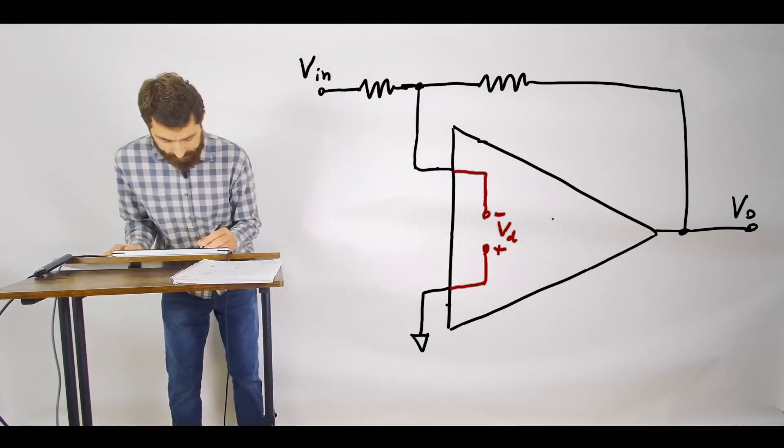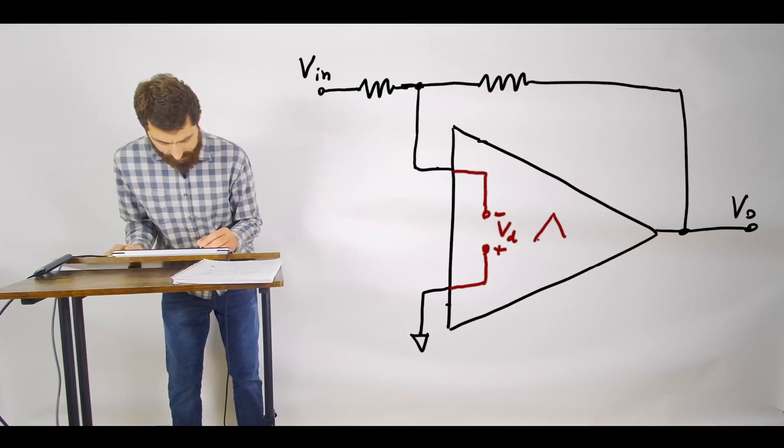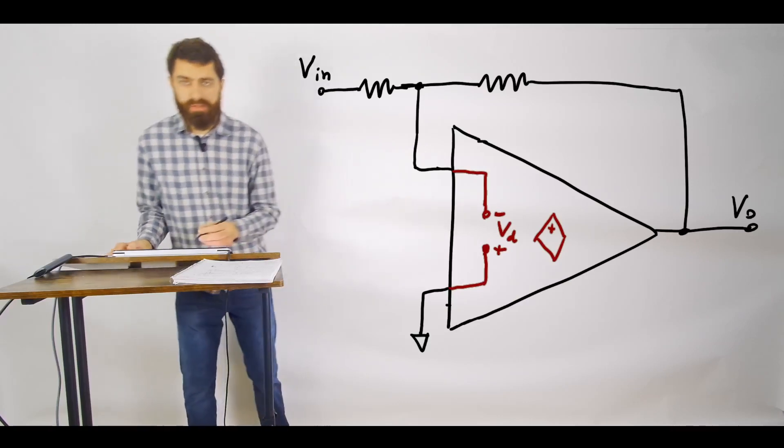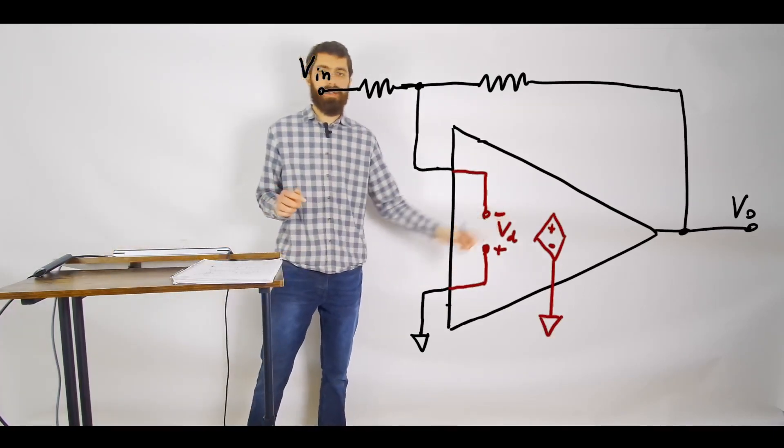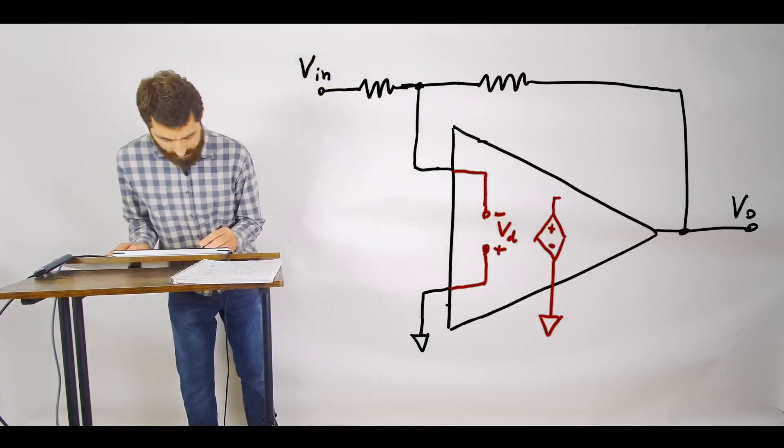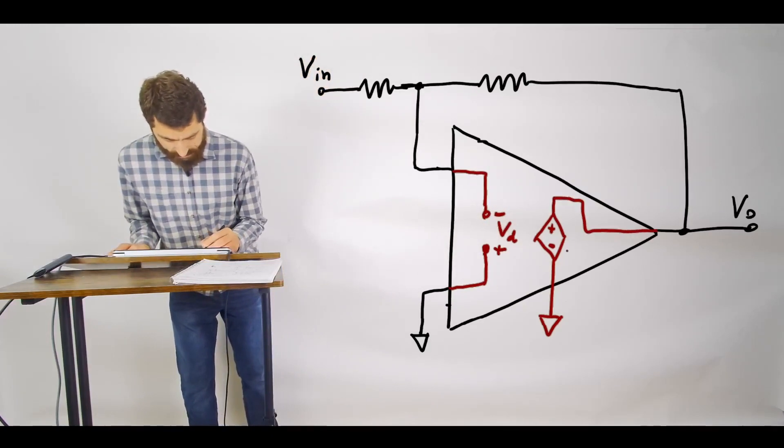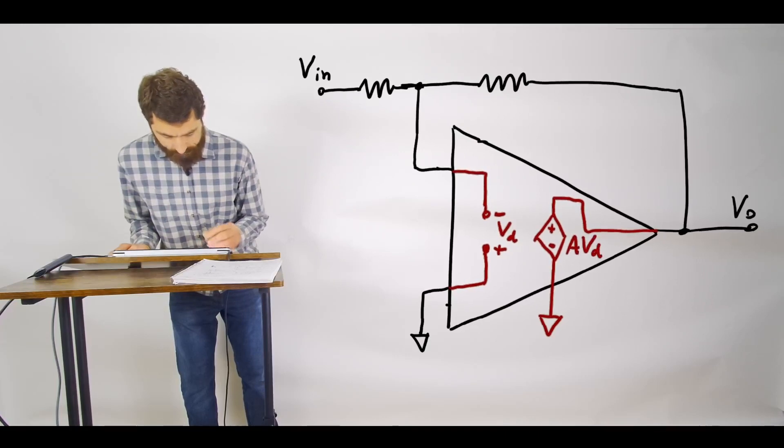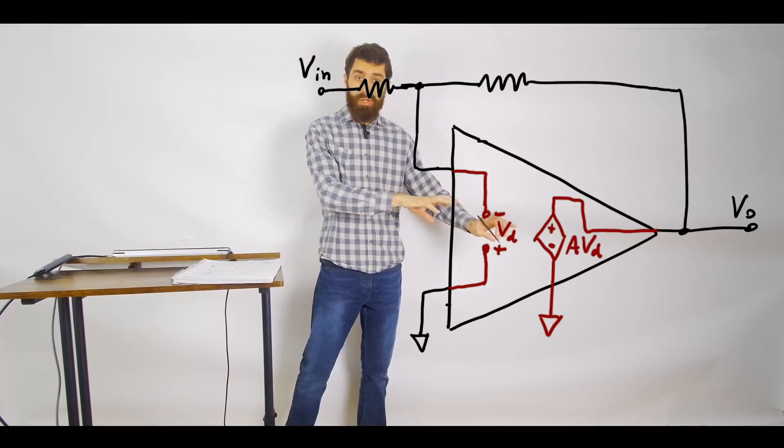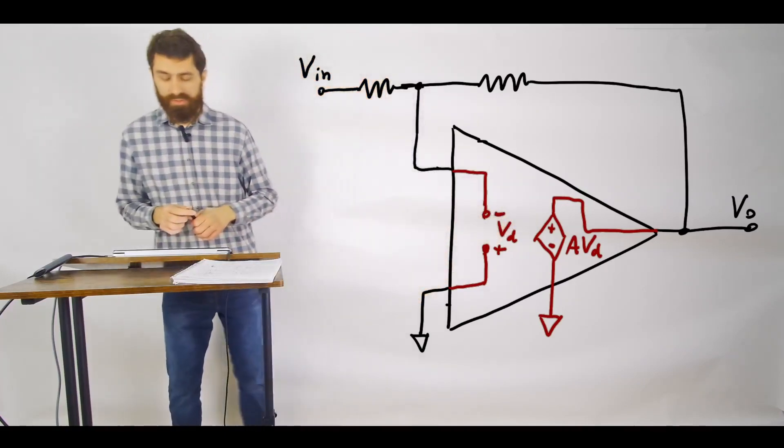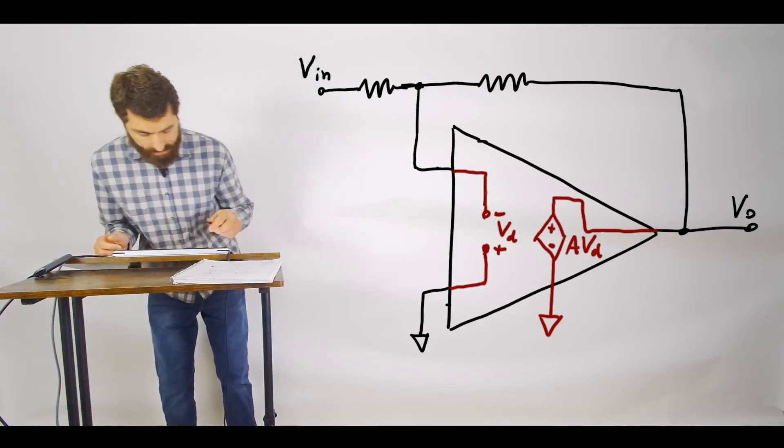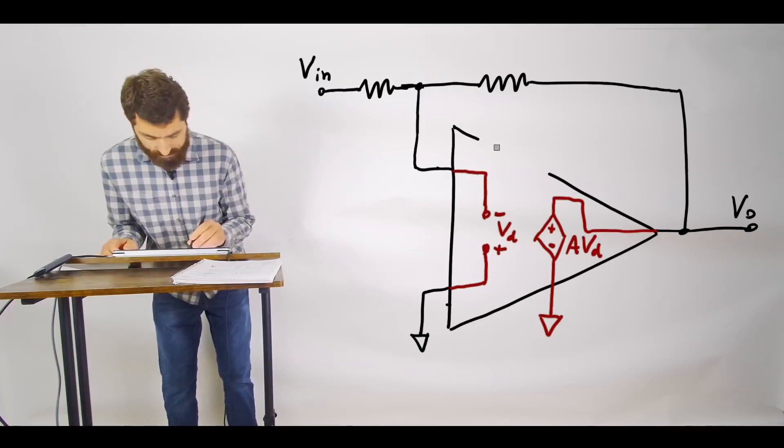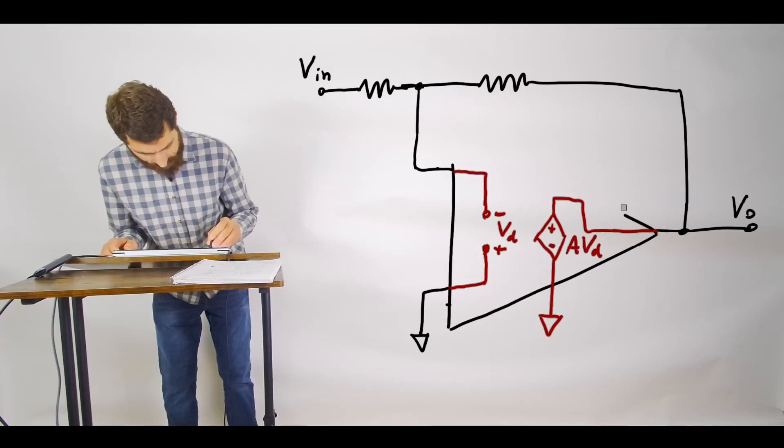Then what you do is you add your dependent source here. Plus always going on the top, minus going on the bottom. Then stick a ground going out like that. Then connect this to your output. And this voltage is always just going to be AVD. Now you have the equivalent circuit plugged in there. As a last step, what you should do then is you should erase the triangle.